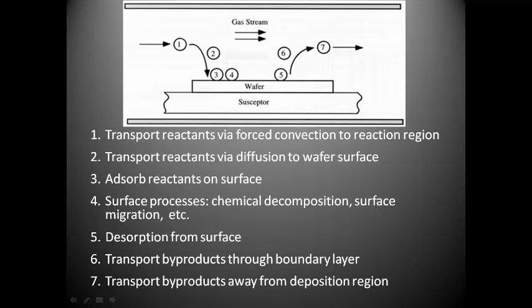This diagram will explain you well about CVD process. In this transport section, it includes some basic points: the transport of reactants via the force of convection to the reaction regions. That means the reactants are firstly transported to the surface of the workpiece. Then transport reactants via diffusion to the wafer surface.